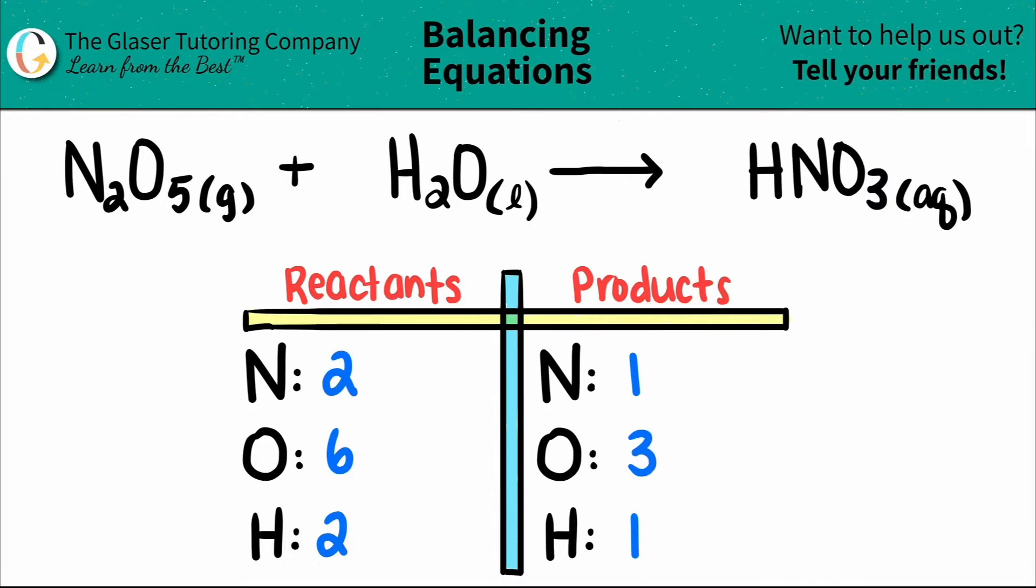Always work with one element at a time. Always pick the easiest one, though. Maybe I can balance the nitrogens. I want to put a number in front of this compound to turn it into the number that I want. In this case, 1 times what will get us to 2? Yeah, 1 times 2. And the number that you times it by is the number that goes in front of the compound.